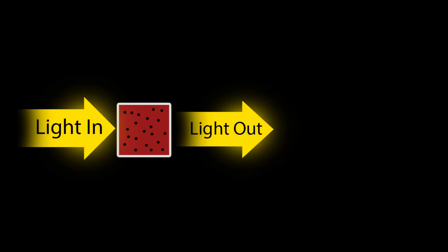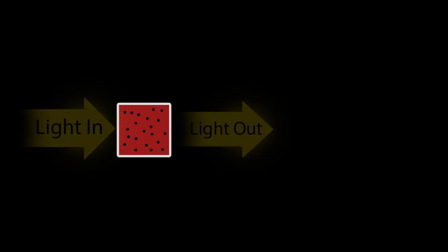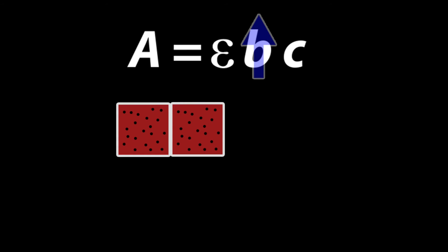Now, what happens if we hold the concentration of the substance constant and increase the thickness of the material for the light to go through? Using Beer's Law, this means B is increasing, because B represents the path length of light, or the distance it has to travel through the material.